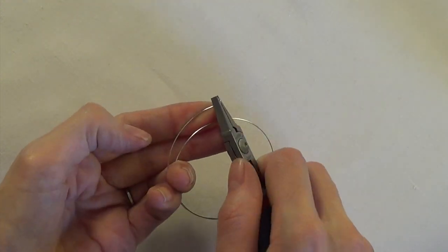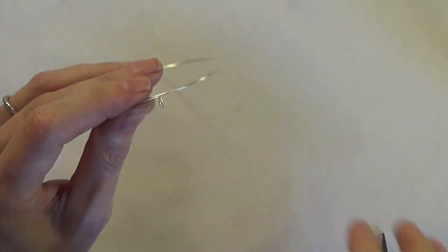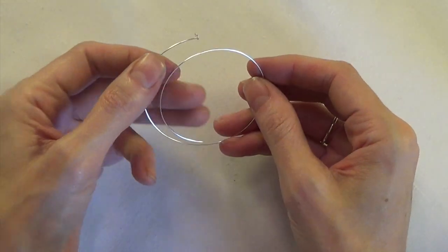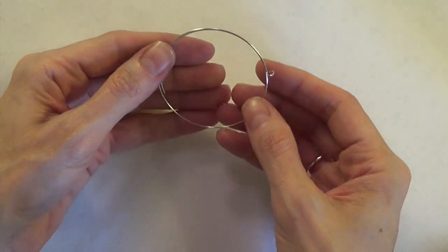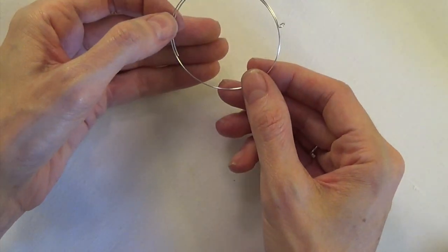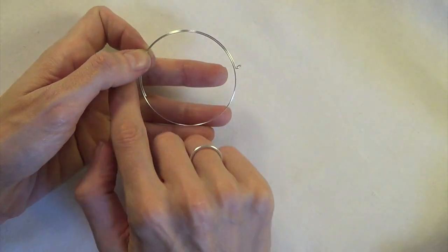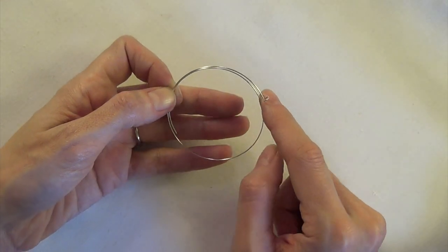Okay at this point if you want to add some beads you're going to go ahead and do that. We need to make sure that the beads are going to be about three quarters of the way around.